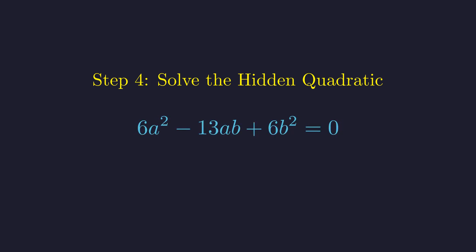This is what's called a homogeneous quadratic in a and b. We can divide everything by b², which is perfectly safe since b = 3^x is always positive. This transforms our equation into a standard quadratic in the ratio a/b.